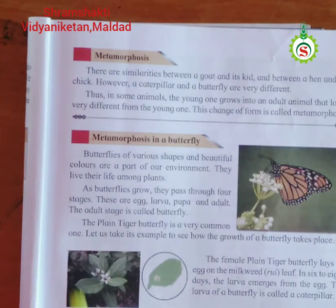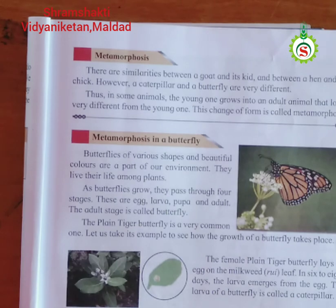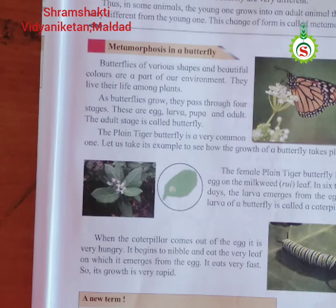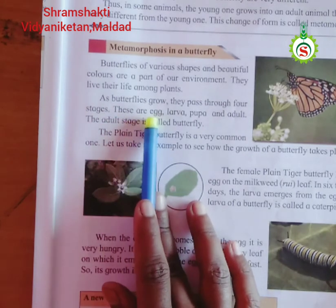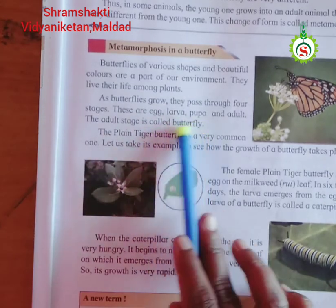See carefully the metamorphosis in butterfly. We are going to study metamorphosis in butterfly — how the butterfly's young one stays in its stages. We are delighted by the sight of bright and colorful butterflies of different shapes and sizes. Butterflies are part of our environment and live their life among plants. As a butterfly undergoes metamorphosis and grows, it passes through four different stages: egg, larva, pupa, and adult. The adult stage is also called butterfly.